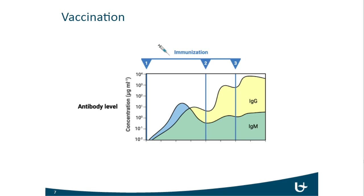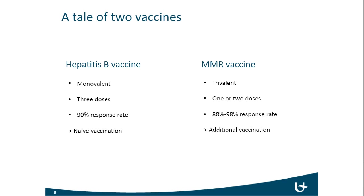Why do we see antibodies being induced in some individuals and not in others? The two studies I'd like to present today feature two different vaccines. One is the hepatitis B vaccine, a monovalent vaccine containing a single antigen, typically given in a three or four-dose schedule with about a 90% response rate. The second is the MMR vaccine — measles, mumps, rubella — a trivalent vaccine often given in one or two doses as a childhood vaccine, with response rates varying between about 88% for the mumps component up to 98% for some other components.